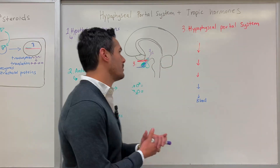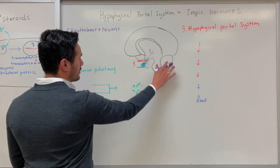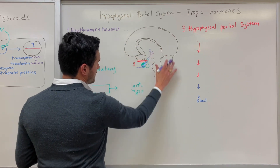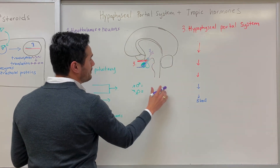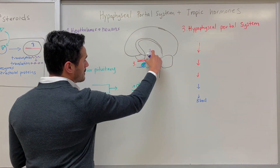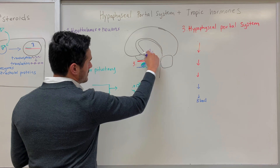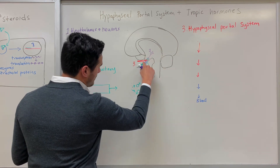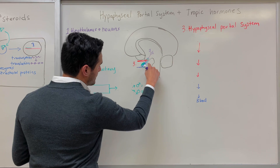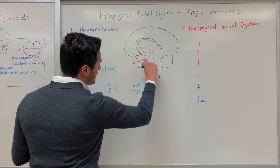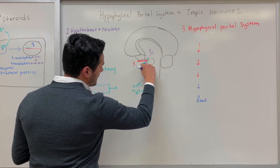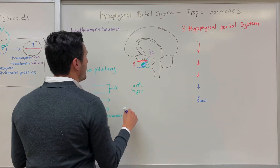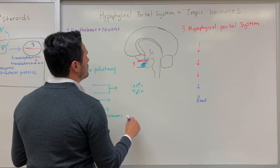The first thing I want to show you is what I have drawn on the board. This represents a cross-section of the brain. The area we're going to focus on is known as the hypothalamus. Below that is the pituitary gland, and the part shaded in green is the anterior pituitary.